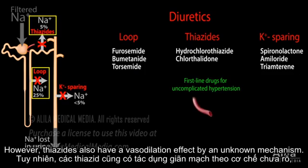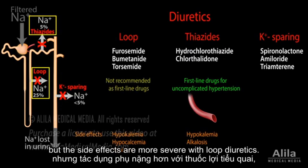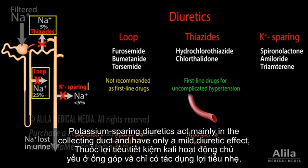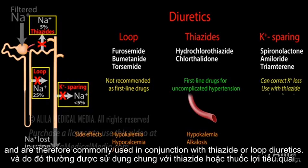However, thiazides also have a vasodilation effect by an unknown mechanism. The two classes produce similar side effects, but the side effects are more severe with loop diuretics. Potassium-sparing diuretics act mainly in the collecting duct and have only a mild diuretic effect, but they can compensate for the potassium loss induced by other diuretics and are therefore commonly used in conjunction with thiazide or loop diuretics.